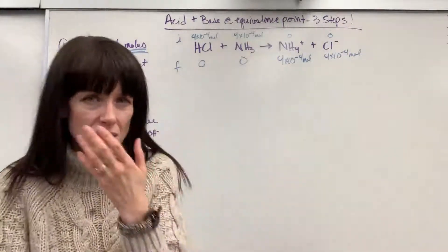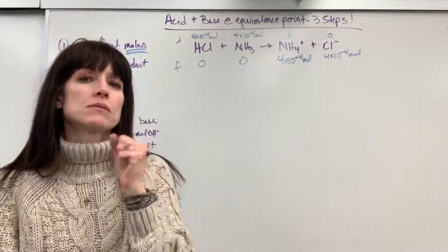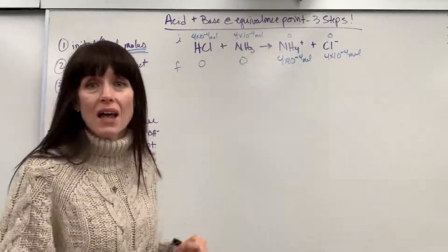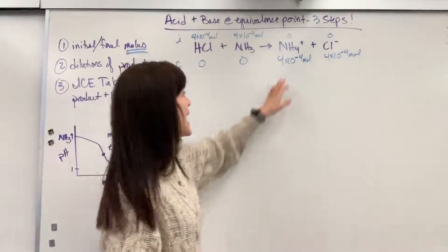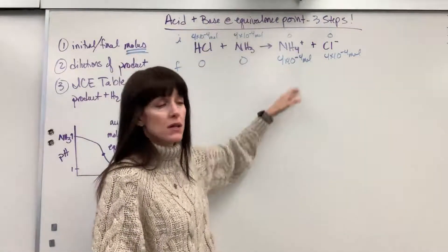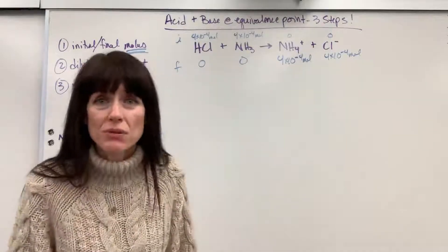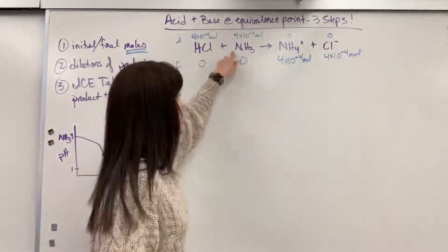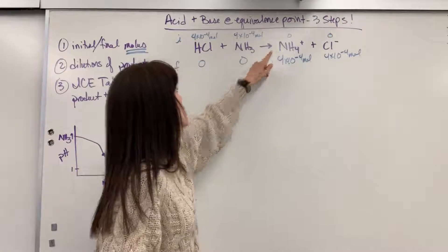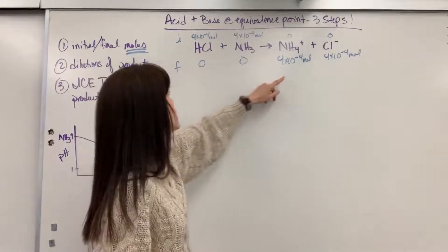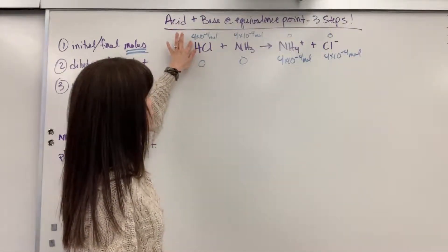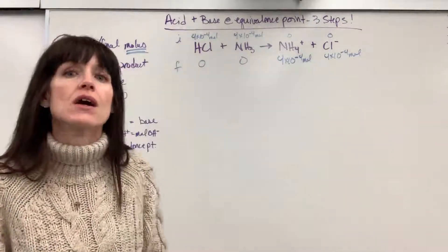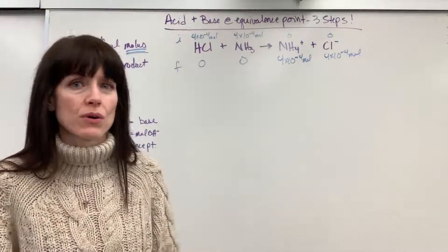Can you predict the mistake students make here? What they will do is add those together and say 8×10⁻⁴. That's not true. It's not 1 + 1 = 2. It's 1:1:1 — for every 1 mole in, it makes 1 mole out. If I have 4×10⁻⁴ moles here, I'm going to have 4×10⁻⁴ moles there. Look at the molar coefficients.